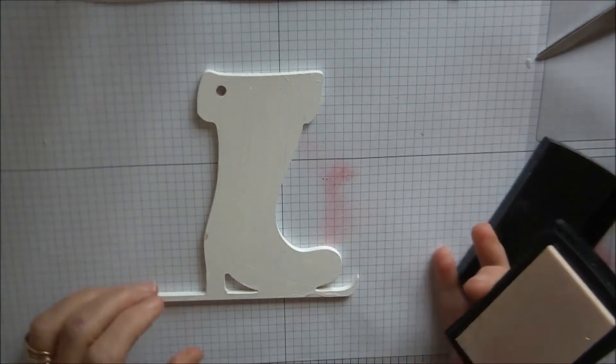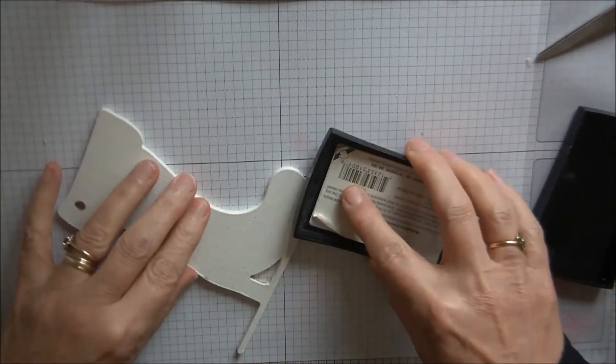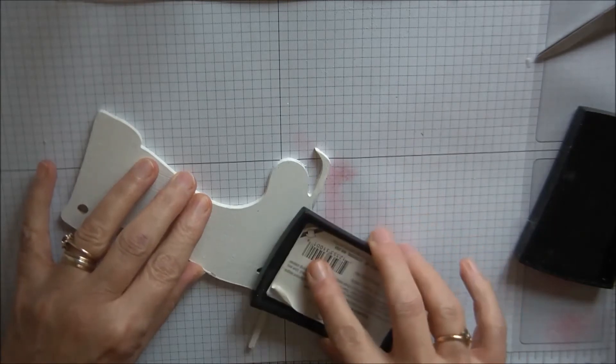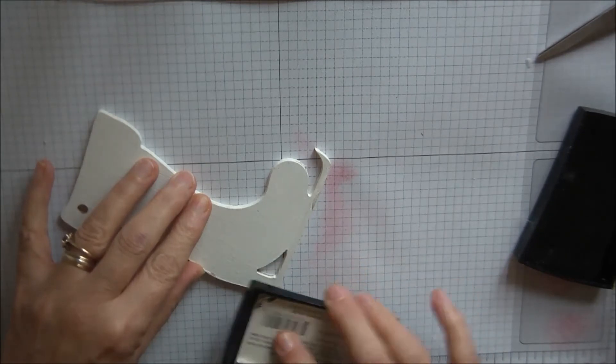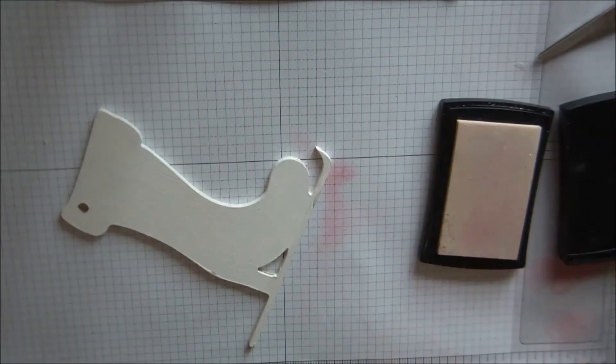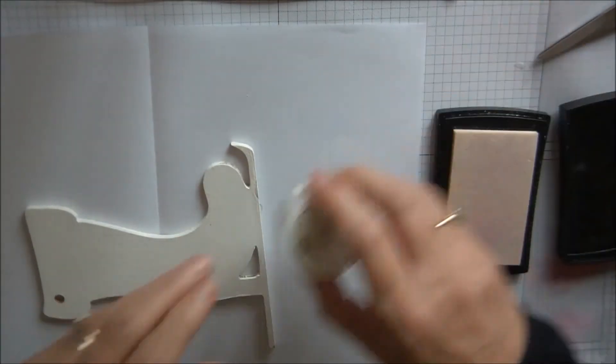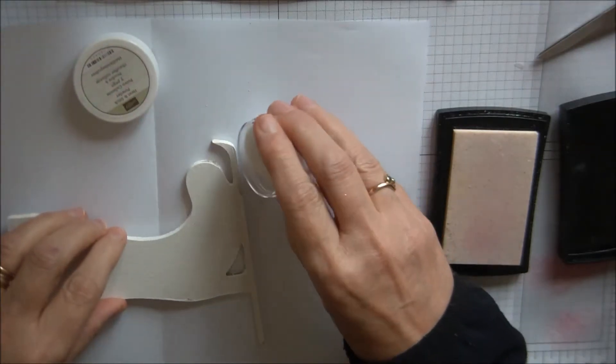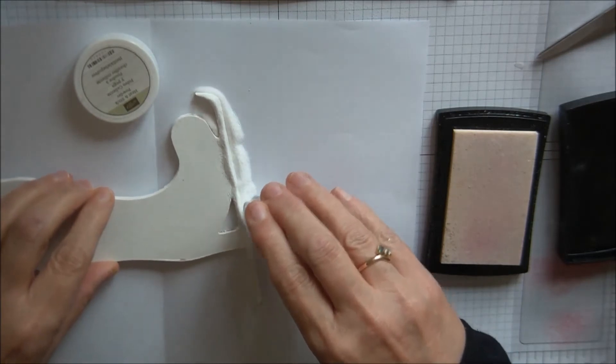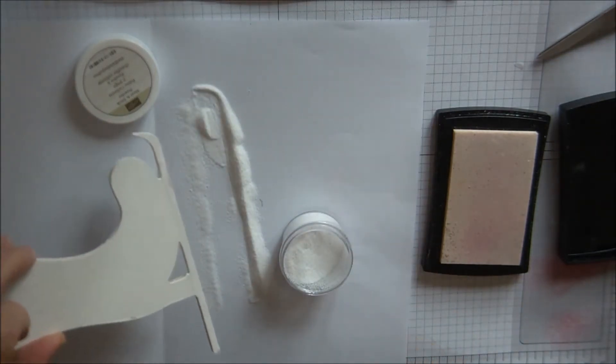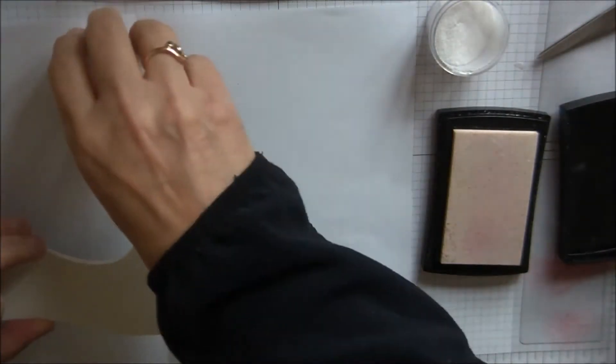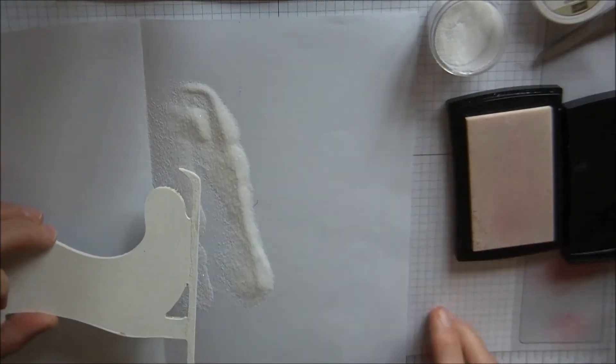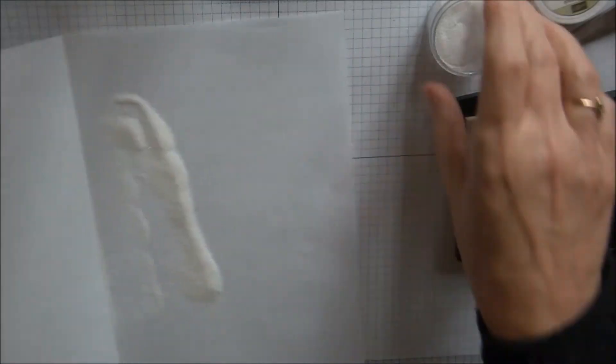Now what I'm going to do is bring my Versamark ink in and I'm going to run it along the bottom of this. Then I'm going to bring a piece of paper in to catch this heat, and I'm just going to sprinkle it along. I don't know if you can see, but it's actually stuck to it, so I'm just going to remove this and pop this in my pot.